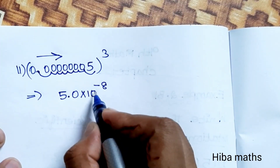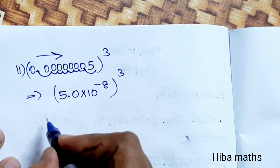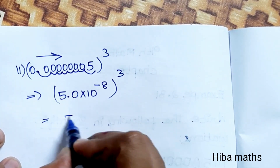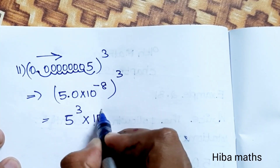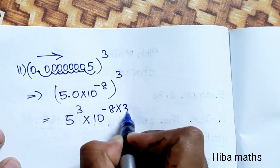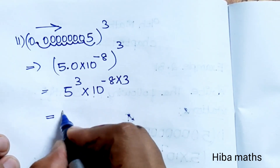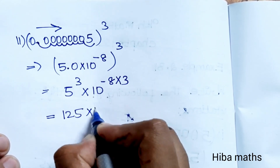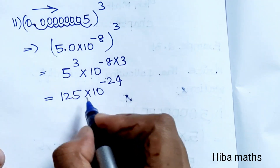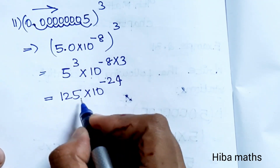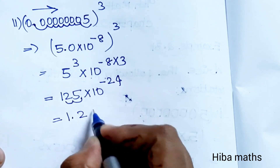Left side to right side minus 8. Power 3 — the 3 is common. So 5 power 3 is equal to 125, and 10 power minus 8, raised to power 3, is equal to 10 power minus 24. 5 cubed is 125, into 10 power minus 24.